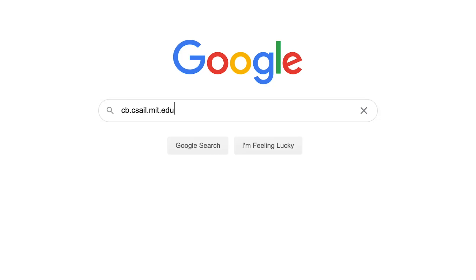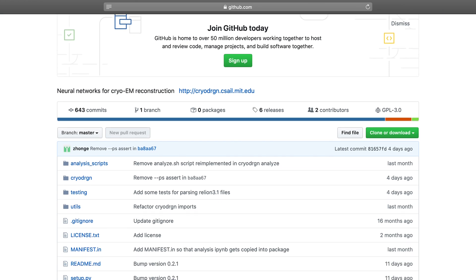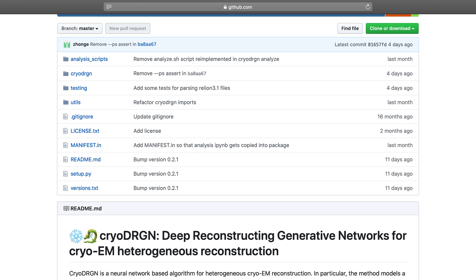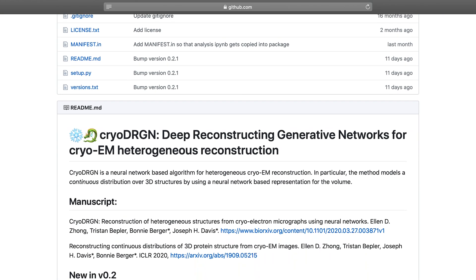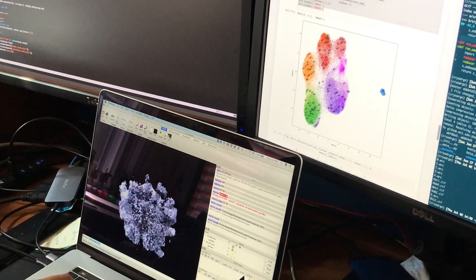CryoDRGN is freely available online and anybody can use it. Even before our study was officially published, we received numerous requests from labs around the world, which I think just really highlights the need in the structural biology community for tools for analyzing and extracting the motions in these dynamical protein structures.